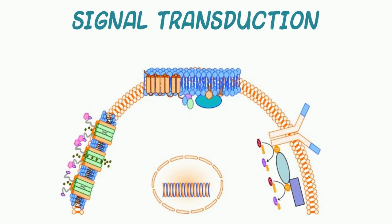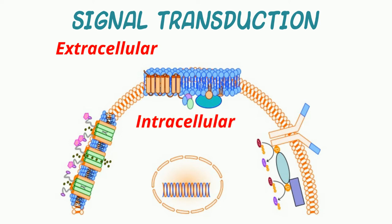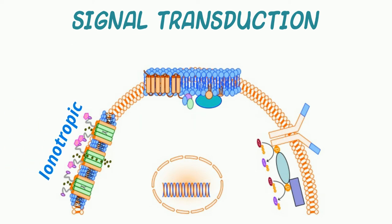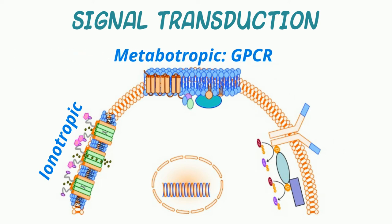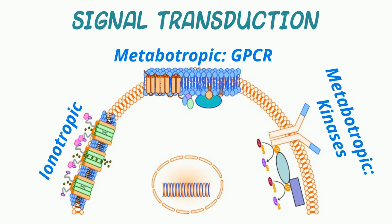As an overview, signal transduction is usually accomplished with one or more of the following key cellular processes, each of which results in allowing a signal or drug to move its effect from outside the cell to the intracellular compartment. Transmembrane receptors are classified as either ionotropic, linked to ion channels, or metabotropic, linked to biochemical processes like the production of cyclic AMP by adenylate cyclase, or to cascades of intracellular phosphorylation or dephosphorylation associated with kinases. There are also intracellular receptors that include cytosolic and particularly nuclear receptors.